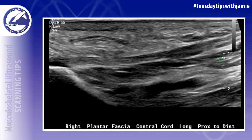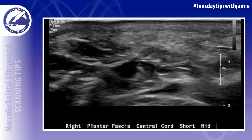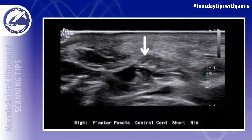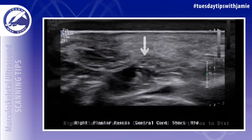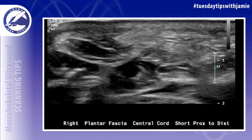How can you detect a tiny tear in a tendon or ligament on your ultrasound images? Here are a few tips. One, look for a focal disruption or loss of fibers. The tendon or ligament fibers may appear focally hypoechoic but still may be intact.